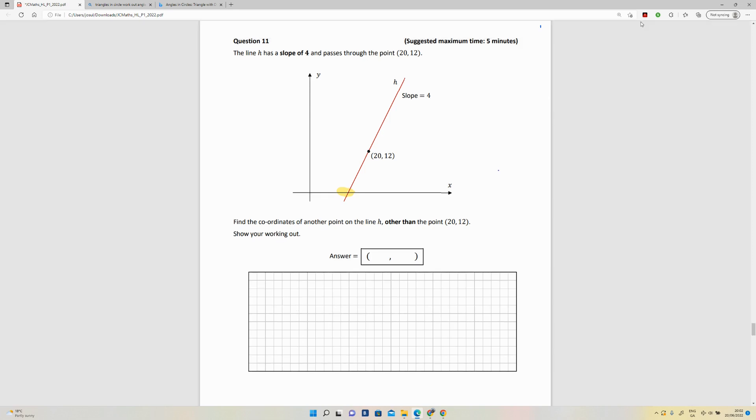So the point we have is 20 comma 12, so that is x1, y1. We know that y is going to be zero, so the question is what is x.